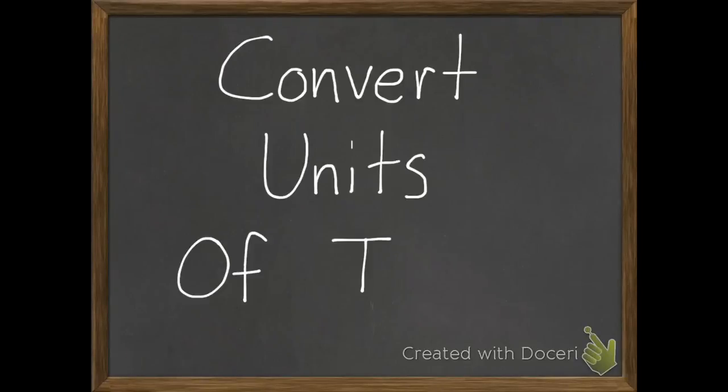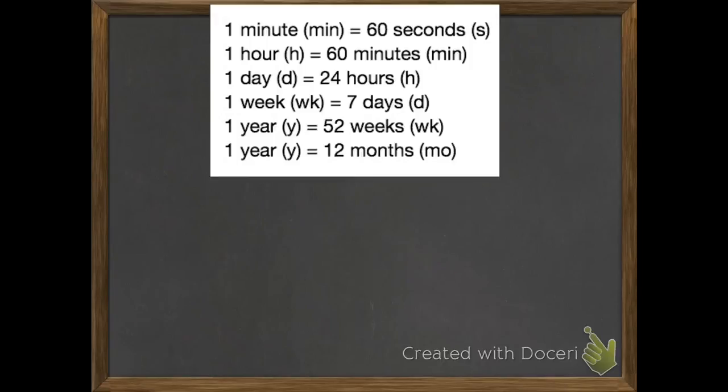Today we're going to convert units of time. Here's the basic facts we're going to be using. 1 minute equals 60 seconds. 1 hour equals 60 minutes. 1 day equals 24 hours. 1 week equals 7 days. 1 year equals 52 weeks, and 1 year equals 12 months.